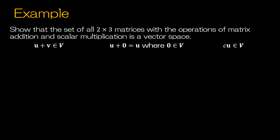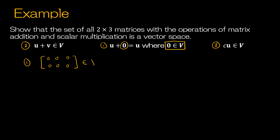Let's take a look at an example. We want to show that the set of all two-by-three matrices with the operations of matrix addition and scalar multiplication is a vector space. There are 10 axioms total, but the three most important are: first, non-empty; then closure under addition; and then closure under scalar multiplication. So let's start with one: is the zero vector contained in V? The zero vector for a two-by-three matrix is the zero matrix, which is indeed a two-by-three matrix, so step one is satisfied — it's non-empty.